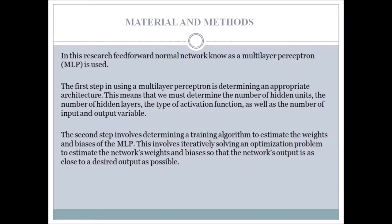Materials and methods: in this research, a feed-forward neural network known as multilayer perceptron (MLP) is used. The first step is determining an appropriate architecture — the number of hidden units, the number of hidden layers, the type of activation function, and the number of input and attribute variables. The second step involves determining a training algorithm to estimate the weights and biases of the MLP, iteratively solving an optimization problem so that the network output is as close to the desired output as possible.